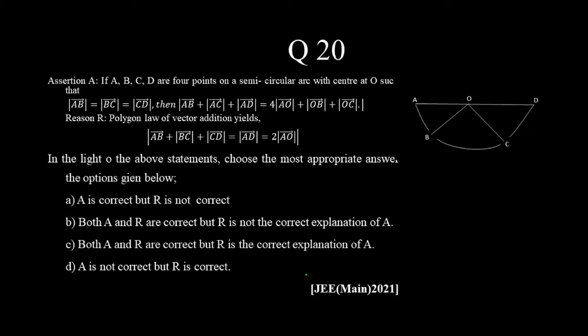Assertion: if A, B, C, D are four points on a semicircle with center O such that modulus of AB is equal to BC is equal to CD.